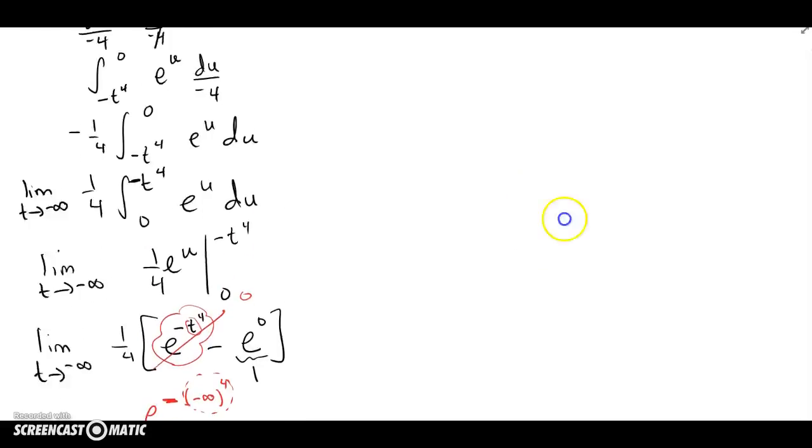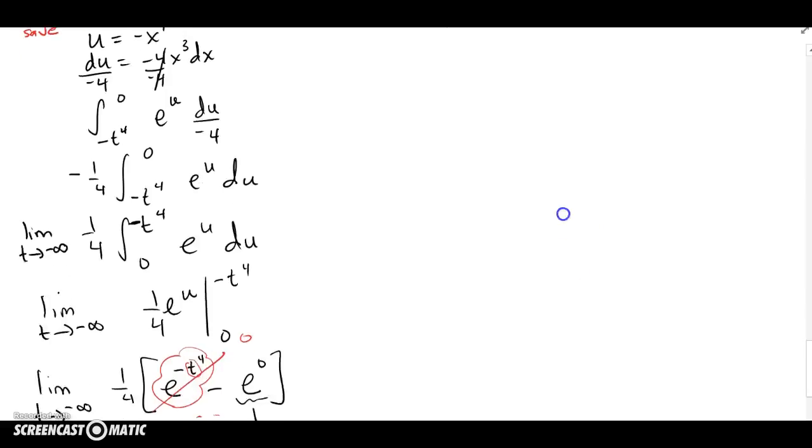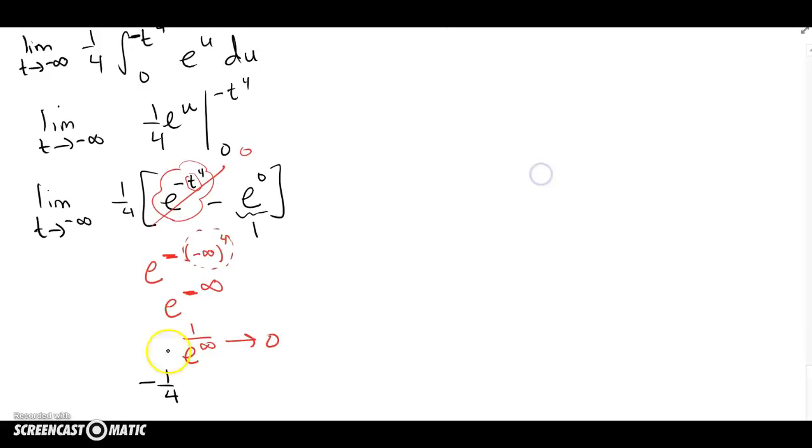So I got e^0, which is 1, and I had a fourth out in the front, so I guess 1/4 times -1 is -1/4. So this piece, this piece of the integral actually gives me a finite answer, which means I should really keep going and analyze the other piece.